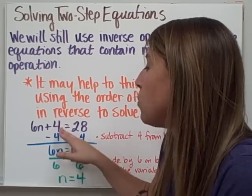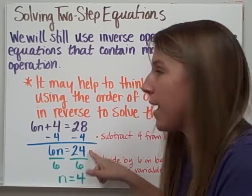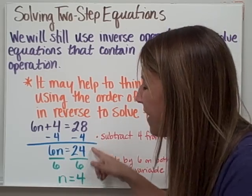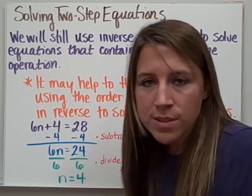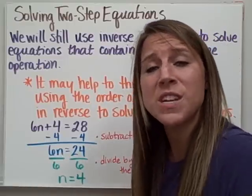And that leaves me with, because that equals 0, 6n equals 24. 28 minus 4 is 24. Now, I just have a one-step equation. This is 6 times n equals 24. Well, the opposite of multiplication is division.